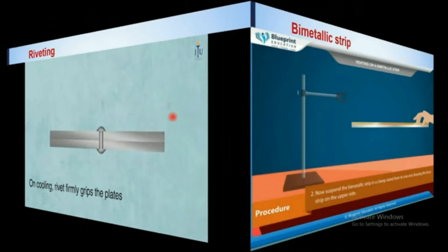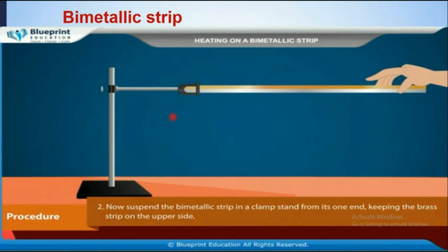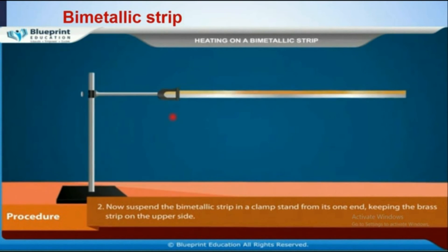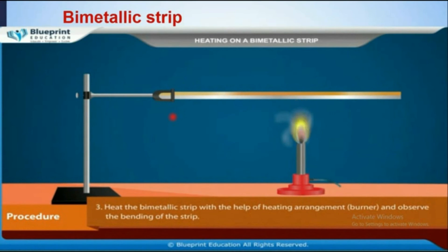Similarly, another application of expansion and contraction of solids is the bi-metallic strip. A bi-metallic strip is made of two different metallic plates which are placed one upon the other and are riveted at the ends. One end of the bi-metallic strip is clamped and the whole strip is uniformly heated by using a spirit lamp or burner.